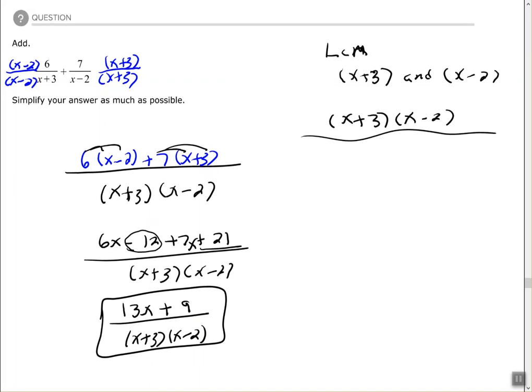So again, we found our least common multiple x plus 3 times x minus 2, created our new common denominator from that, went back to our original fractions to see what we multiplied the original denominators by. The first fraction I had to multiply by x minus 2, the second fraction by x plus 3. Let's try another one.